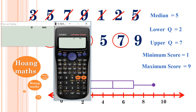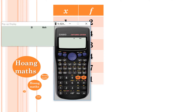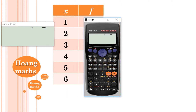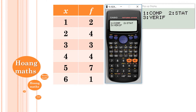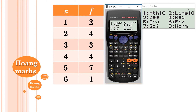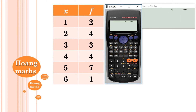Now let's try the next exercise with a frequency table showing scores and their frequencies. We'll use the calculator to find the five-point summaries. First, make sure the frequency setting is on: press Shift, Setup, scroll down, select Stat (option 3), then turn frequency on (option 1).